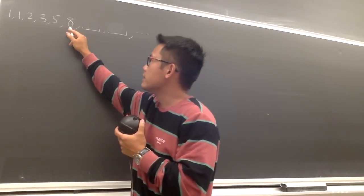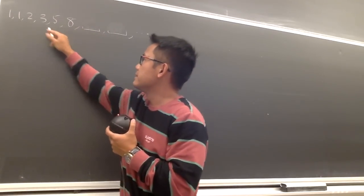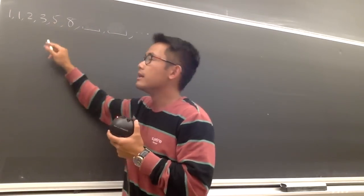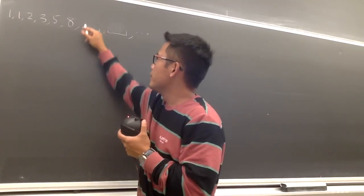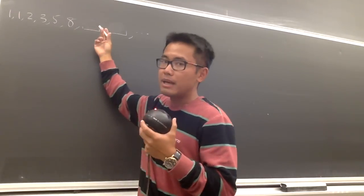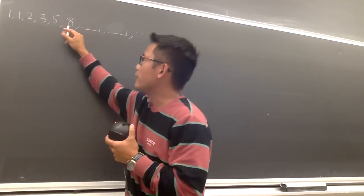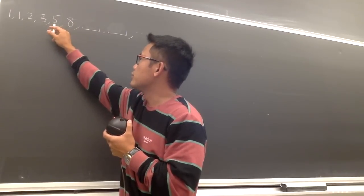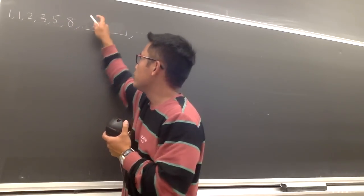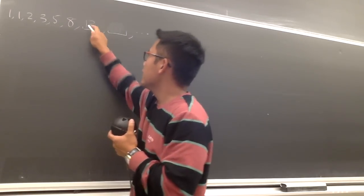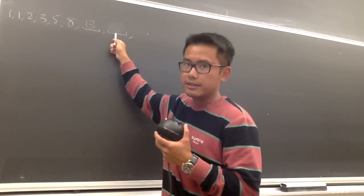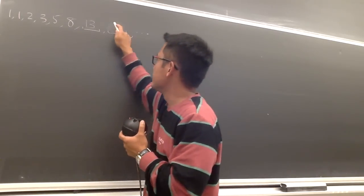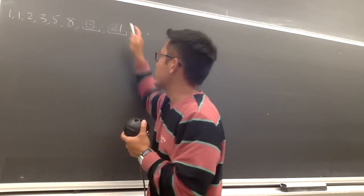Well, let's look at 8 first. You know 8 is the same as 3 plus 5, right? To figure this out, it's the same as the sum of the previous two terms. So to do this, we just do 5 plus 8, which is going to be 13. And likewise, for the next term, we just have to do 8 plus 13, and that's going to give us 21.